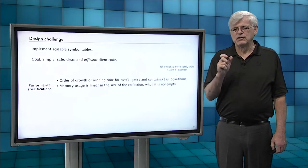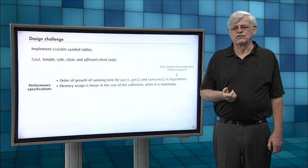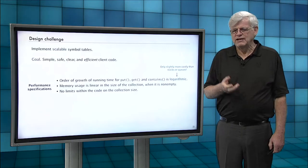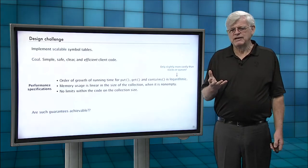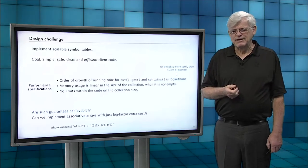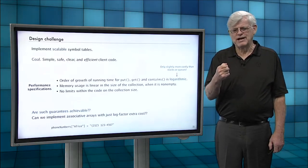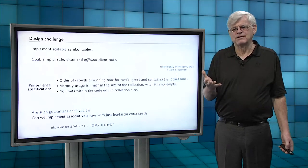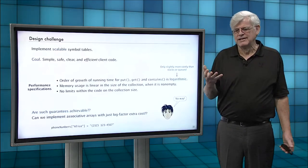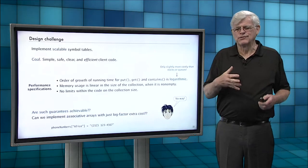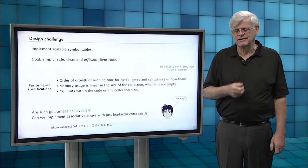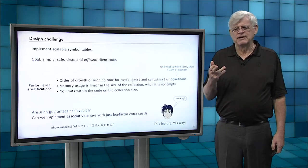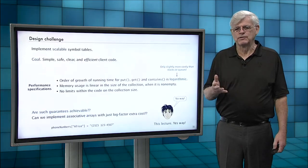And again, we want the memory usage to be linear in the size of the collection, just as for stacks and queues when it's not empty. And no limits within the code on the collection side. So that's the challenge. Can we really achieve such guarantees? Can we implement associative arrays with just log factor extra costs? That seems to be quite a difficult challenge. The naive programmer might say there's no way you can do that—you can search through a billion keys just looking at 30 things and allow arbitrary insertions. And that's what this lecture is about. Yes, we can achieve that guarantee, and that's what we're going to look at next.